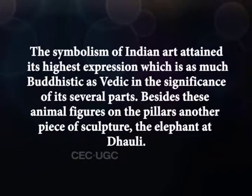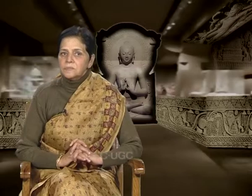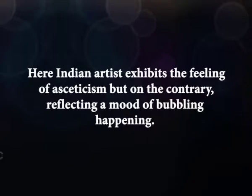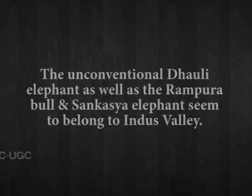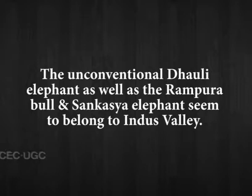The lion heads with incised parallel lines representing the muzzle, and the eyes in a triangular shape, resemble Persian lion figures. The symbolism of Indian art attained its highest expression, which is as much Buddhist as Vedic, in the significance of its several parts. Its bulk, movement, and lifelike finish make it a superb example of Ashoka's plastic art. Here the Indian artist exhibits feelings not of asceticism but reflects a mood of bubbling happiness. It strikes an essential and genuine note, quite different from the art traditions of the capitals. The Dhauli elephant, as well as the Rampurwa and Sankisa elephants, seem to belong to the Indus tradition.